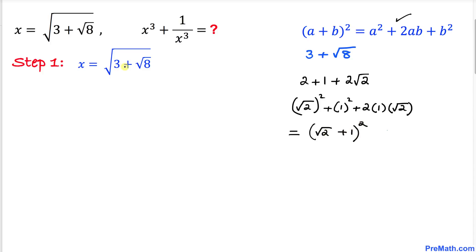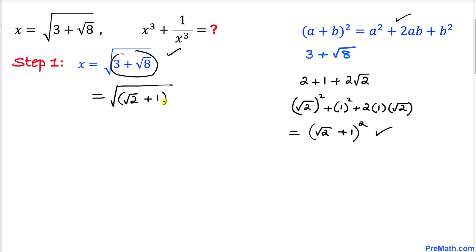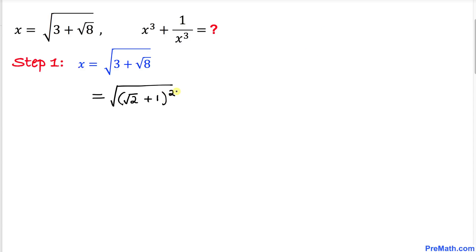Now let's substitute back into our original expression. We replace 3 plus square root of 8 with (√2 + 1)², so x equals the square root of (√2 + 1)². The square root and the square undo each other, so our x value turns out to be simply √2 + 1.